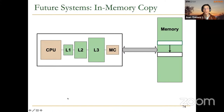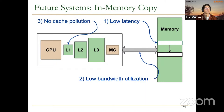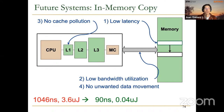RowClone provides low latency, low external bandwidth utilization, no cache pollution, and no unwanted data movement. Compared to conventional copy, RowClone achieves 11 times lower latency and 74 times lower energy consumption. We will discuss this paper in more detail in a later lecture.